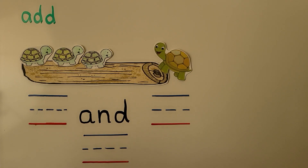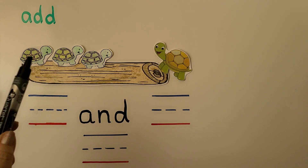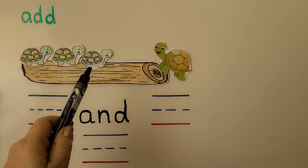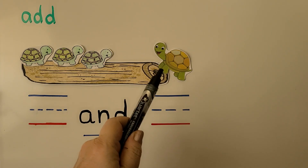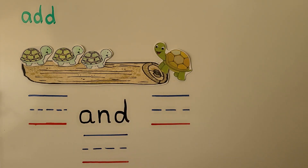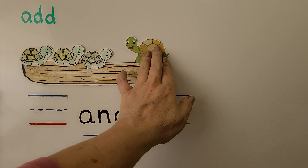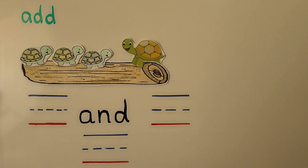There are three turtles on a log: one, two, three. One more turtle comes. How many turtles are on the log now? We can put this turtle on the log. He comes and gets on the log.